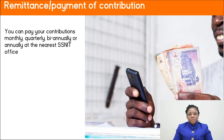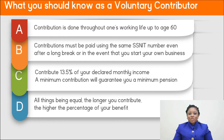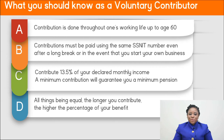What you should know as a voluntary contributor: contribution is done throughout one's working life up to 60 years. You can, however, opt to go on reduced pension at 55 years or more. Contributions must be paid using the same SNIT number even after a long break — for instance, if you start your own business. Contribute 13.5% of your declared income. A minimum contribution will guarantee you a minimum pension. All things being equal, the longer you contribute, the higher the percentage of your benefits.